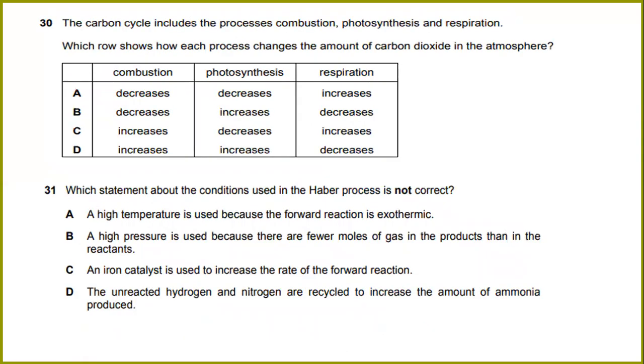The carbon cycle includes the processes: combustion, photosynthesis, and respiration. Which will show how each process changes the amount of carbon dioxide in the atmosphere? Combustion will increase the carbon in the atmosphere. Photosynthesis will decrease the carbon dioxide. Meanwhile, respiration will increase the amount of carbon dioxide in the atmosphere.